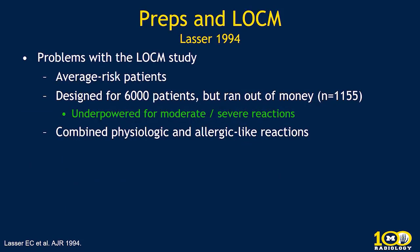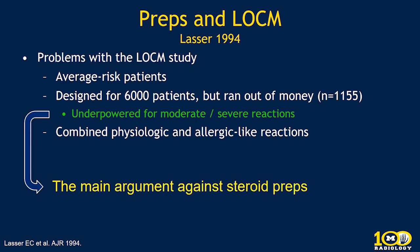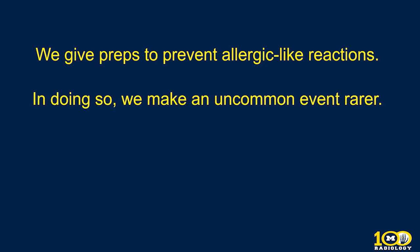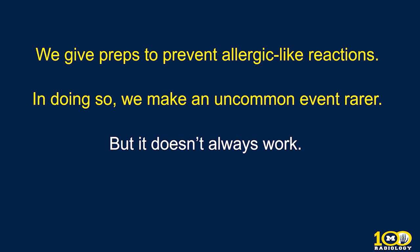There were several problems with this study. These were average-risk patients with no particular risk for a reaction. It was designed for 6,000 patients but underpowered for moderate and severe reactions due to funding. Additionally, physiologic reactions and allergic-type reactions were combined — things like vasovagal reactions and hypertension were part of the analysis. The main argument against steroid preps is that we don't have level-one evidence that preps prevent moderate and severe reactions with modern contrast media, particularly for high-risk patients. We take an uncommon event and make it rarer, but it doesn't always work.